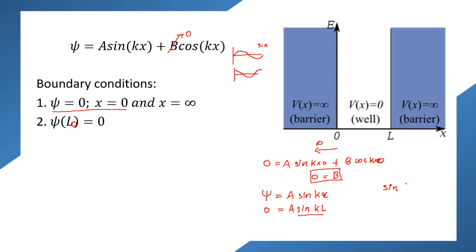We know that sin(θ) = 0 when θ = nπ, where n = 0, 1, 2, 3, etc. Therefore, for this equation to hold, kL must equal nπ. This gives us k = nπ/L.